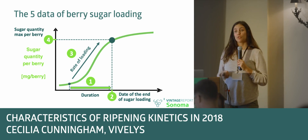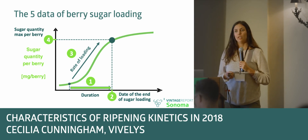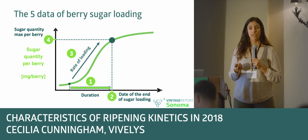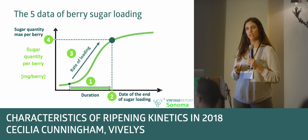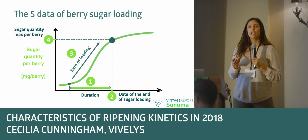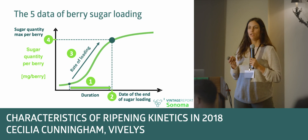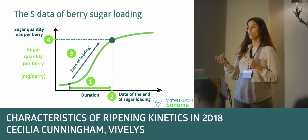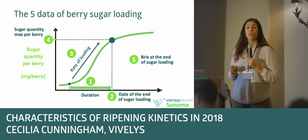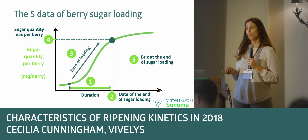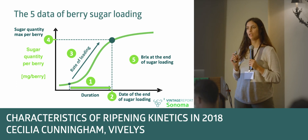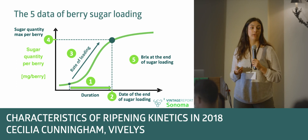The amount of sugar at the end of the sugar load is an important parameter because it's an indicator of quality. We know it's connected to a lot of other components that Scott is going to present later. But the sugar can give us, in an easy and fast way, a good idea if we will reach a certain potential or not. Connected to this, we have the Brix at the end of the sugar load, which is connected to the amount of sugar per berry — but sometimes it can differ if we have dilution effects and bigger berries.